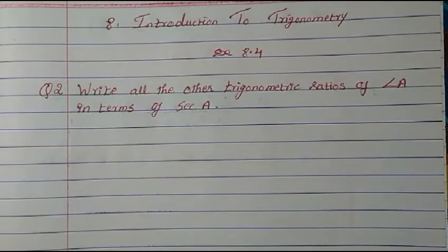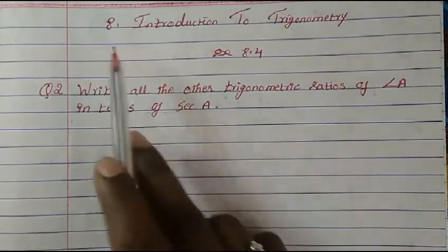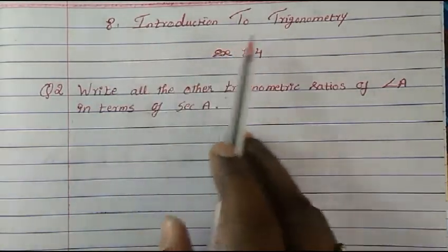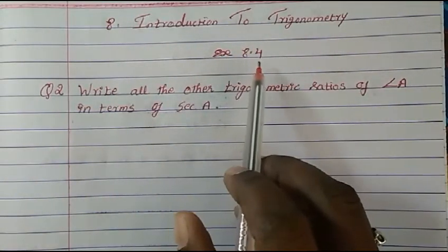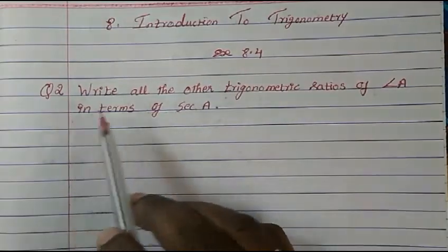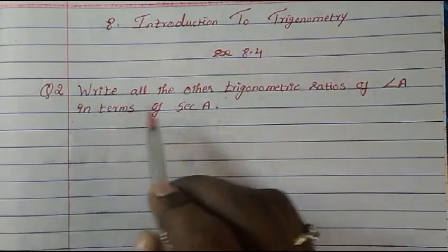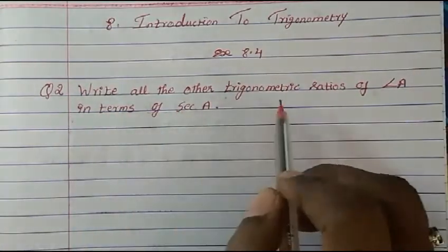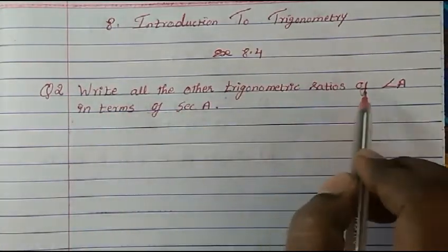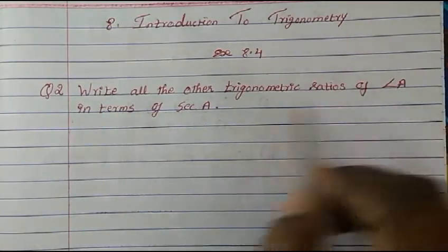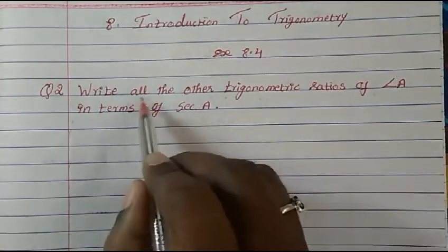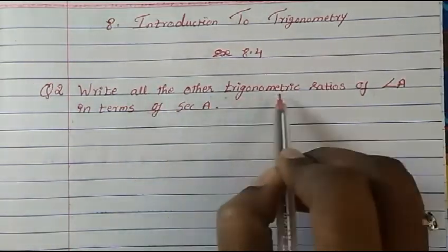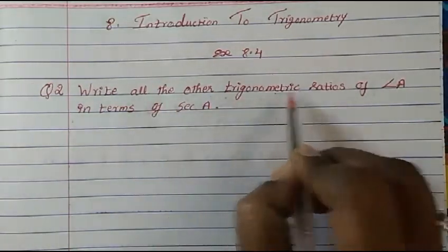Hi everyone, welcome to Mash Math. Today we are going to study Chapter 8: Introduction to Trigonometry, Exercise 8.4, Question 2 — write all the other trigonometric ratios of angle A in terms of sec A.